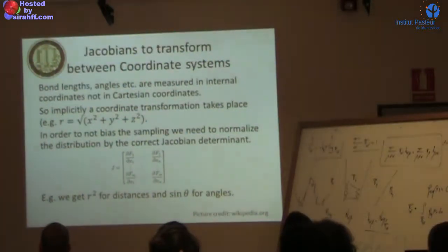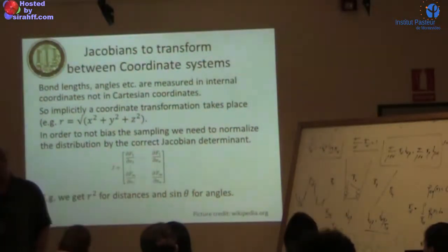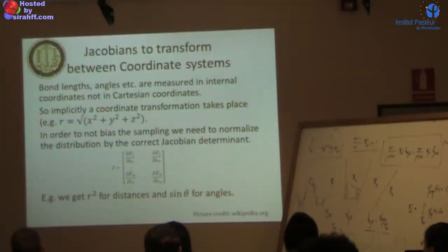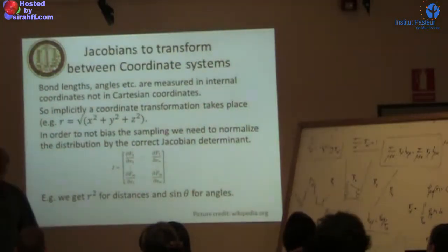When you sample bond lengths and angles, you measure that in internal coordinates - spherical coordinates r, φ, θ, not Cartesian x, y, z. So we have a coordinate transformation. For example, r is square root of x squared plus y squared plus z squared. To not bias the sampling, we need to normalize the distribution by the correct Jacobian determinant. You get an r squared for distances and sine θ for angles. As we do IBI, you can do it without Jacobians and it will converge. But if you do the Jacobians, you need one or two iterations. Without Jacobians, especially for angles, you need significantly more iterations.